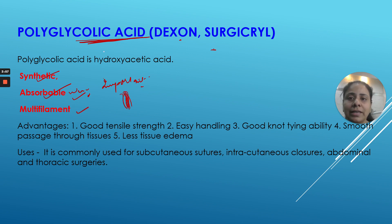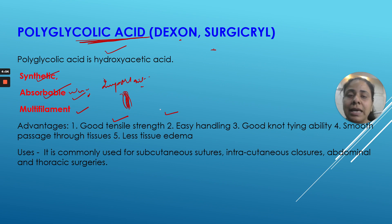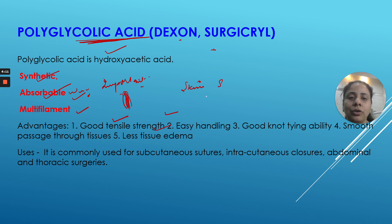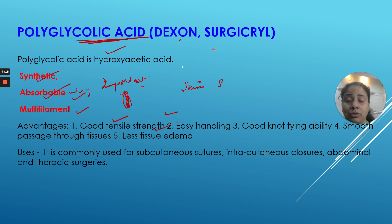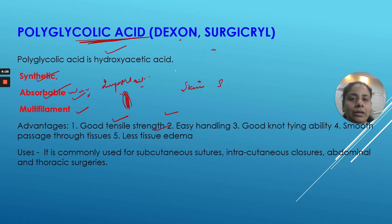The advantages of polyglycolic acid include good tensile strength, very easy handling properties, very good knot-tying properties, and very little tissue edema. It is mostly used by surgeons for skin closures and for abdominal and thoracic surgeries. In the oral cavity we do not use polyglycolic acid too much, but we use its variant, polyglactin 910.